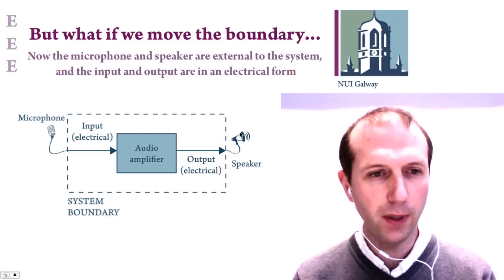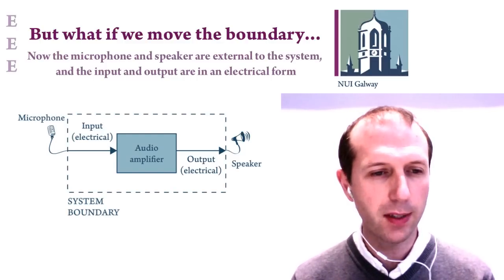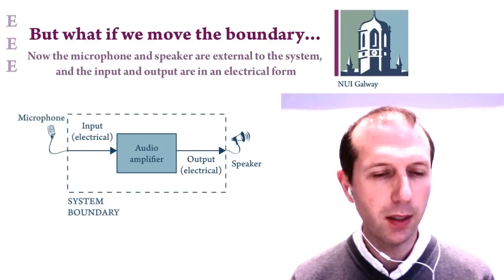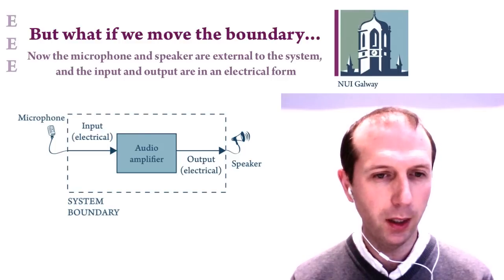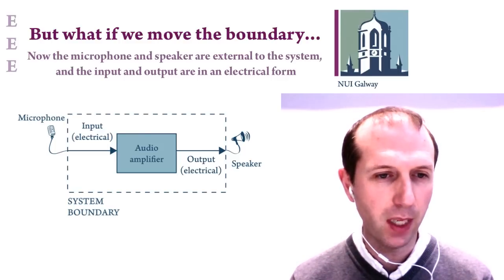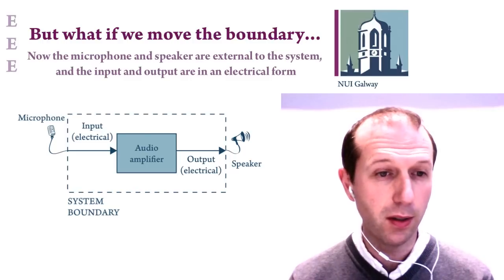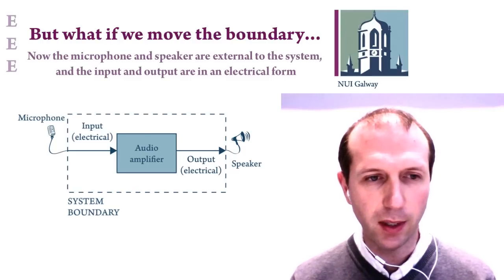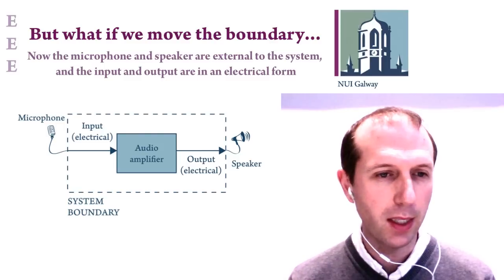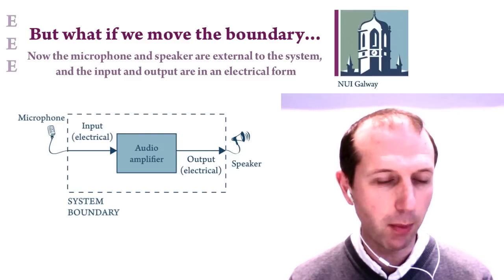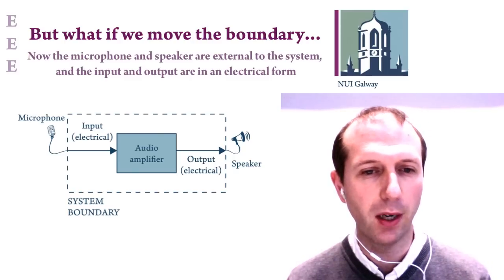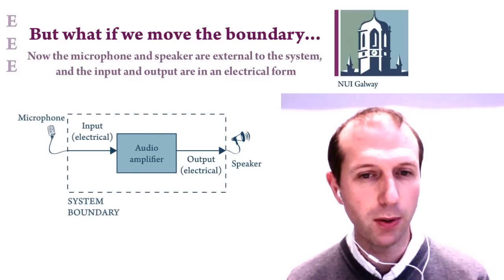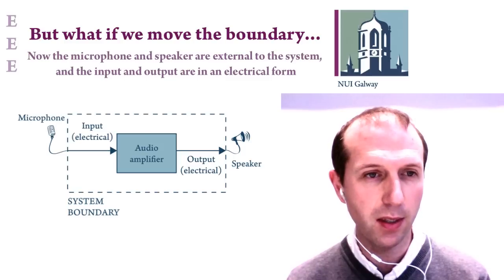Now if we contracted the system boundary to just include the amplifier — not the microphone and speaker — the inputs and outputs to the system change. Instead of sound waves, the input to the amplifier is now an electrical signal coming from another system, for example the microphone, and the output from the amplifier is another electrical signal being sent into yet another system, in this case the speaker.